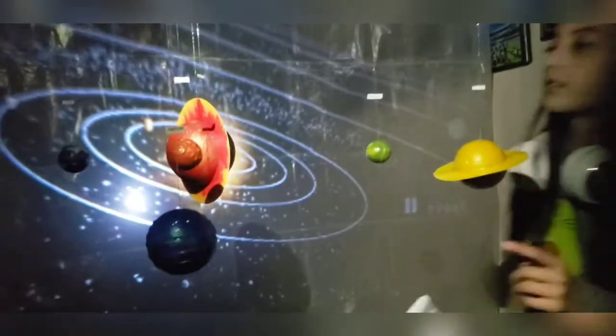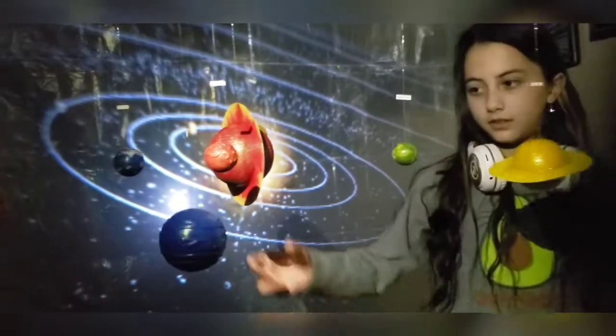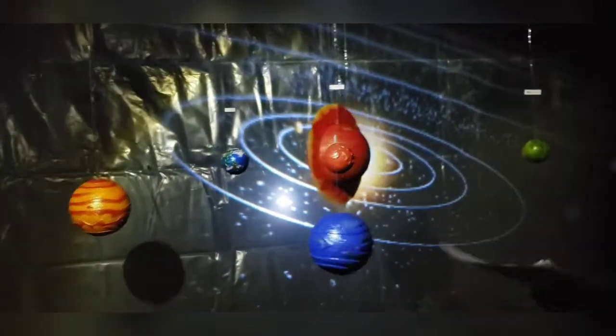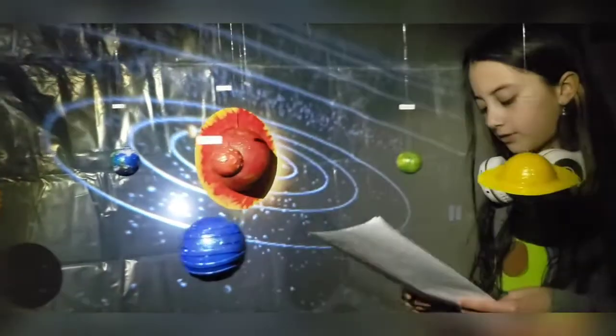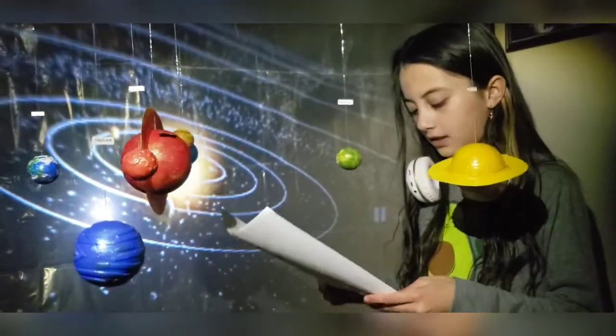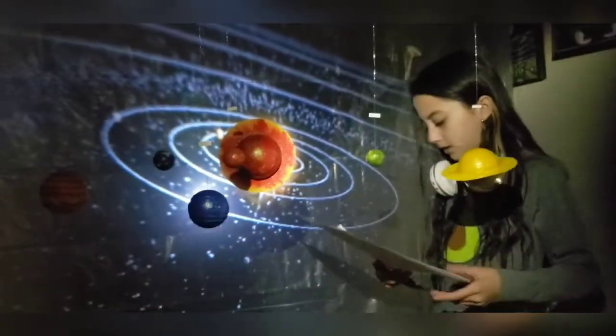And then, the sun is 865,000 miles in diameter. It is 93 million miles from the Earth.